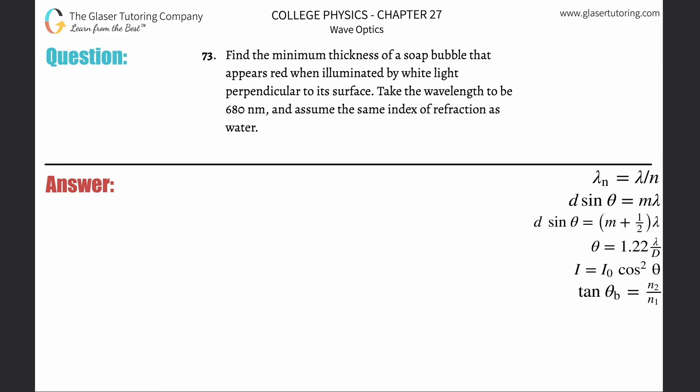Number 73: find the minimum thickness of a soap bubble that appears red when illuminated by white light perpendicular to its surface. Take the wavelength to be 680 nanometers and assume the same index of refraction as water.